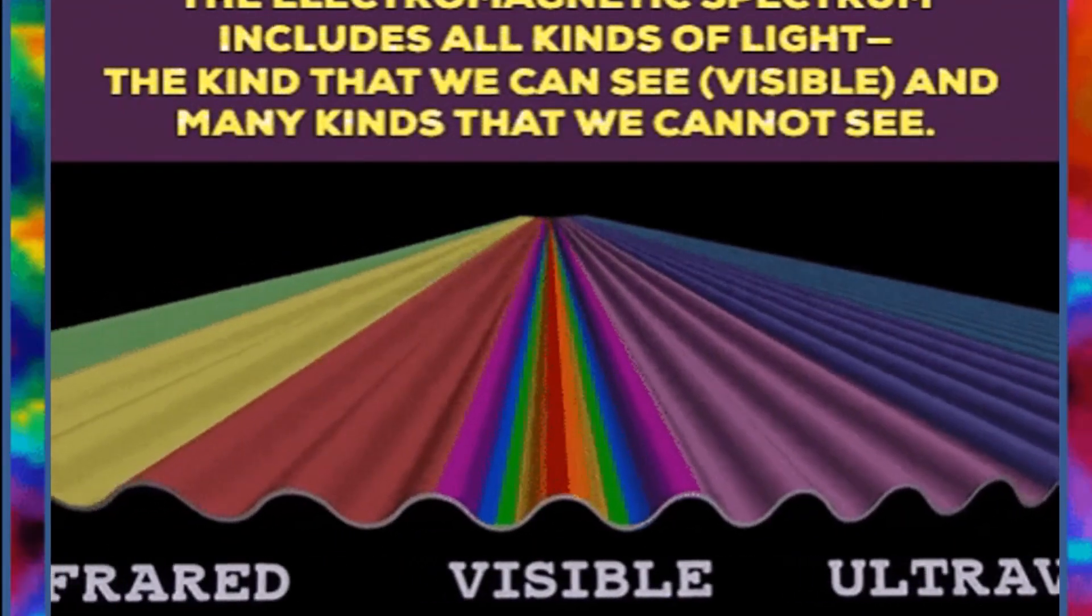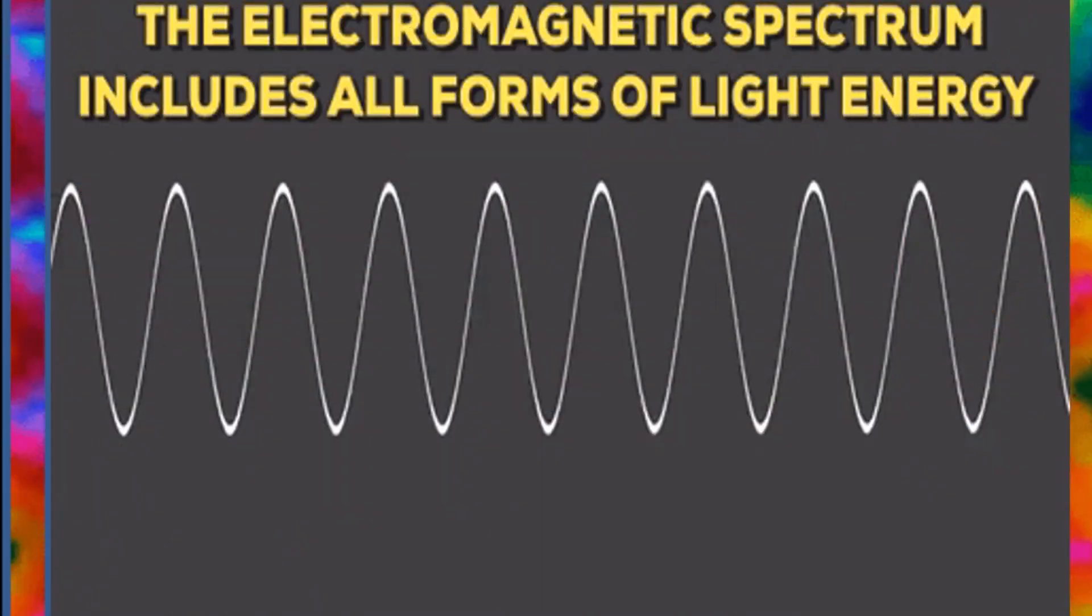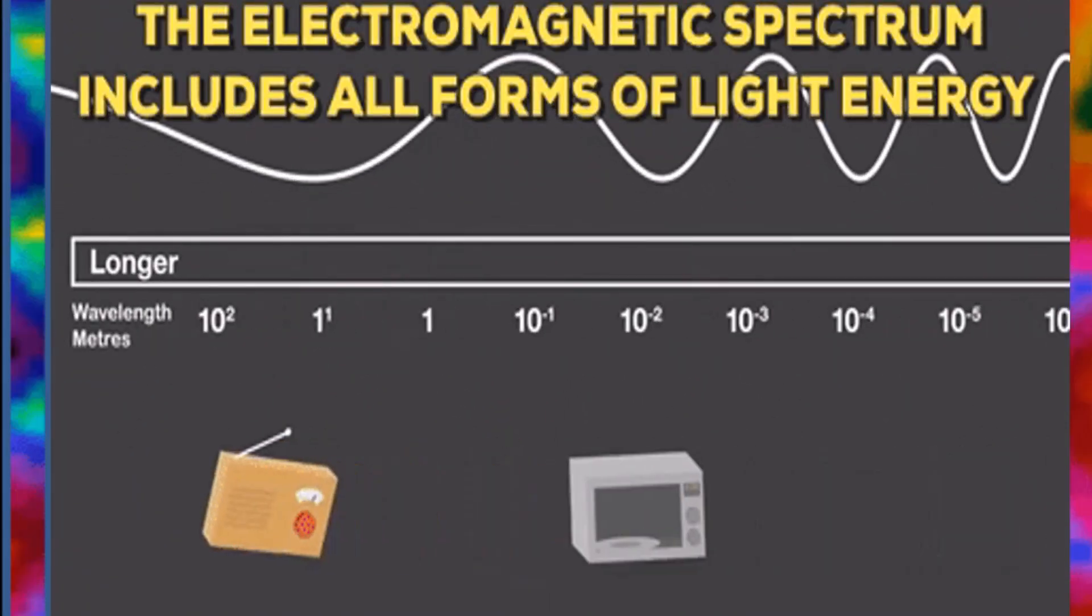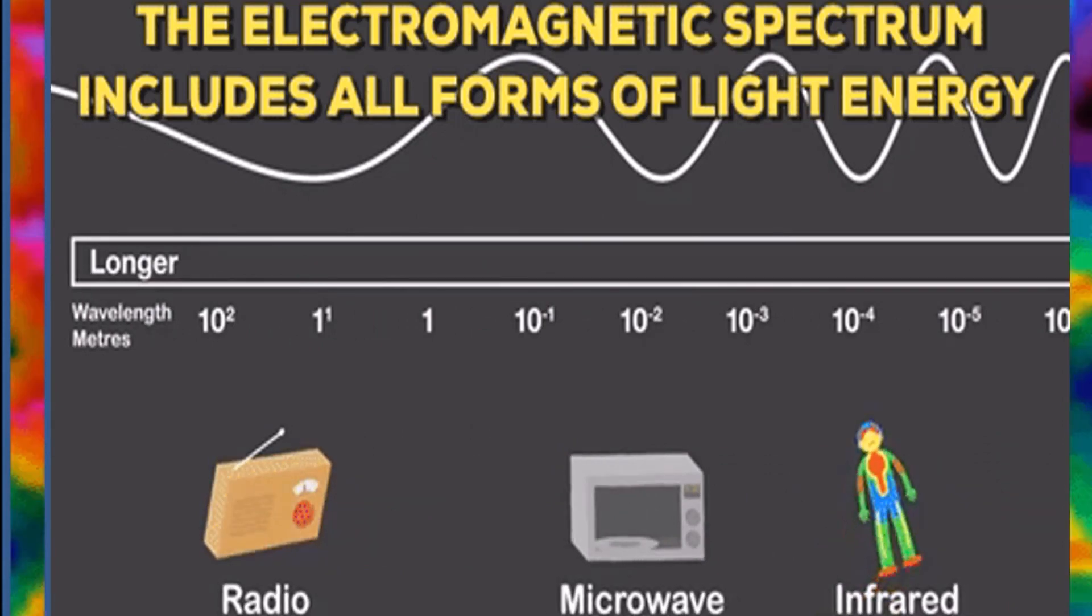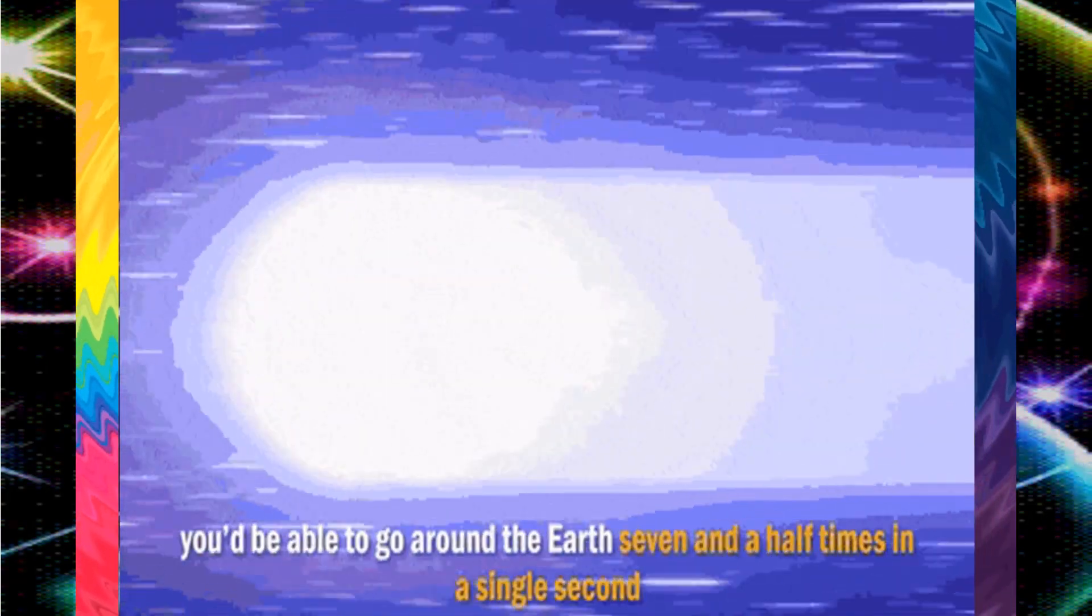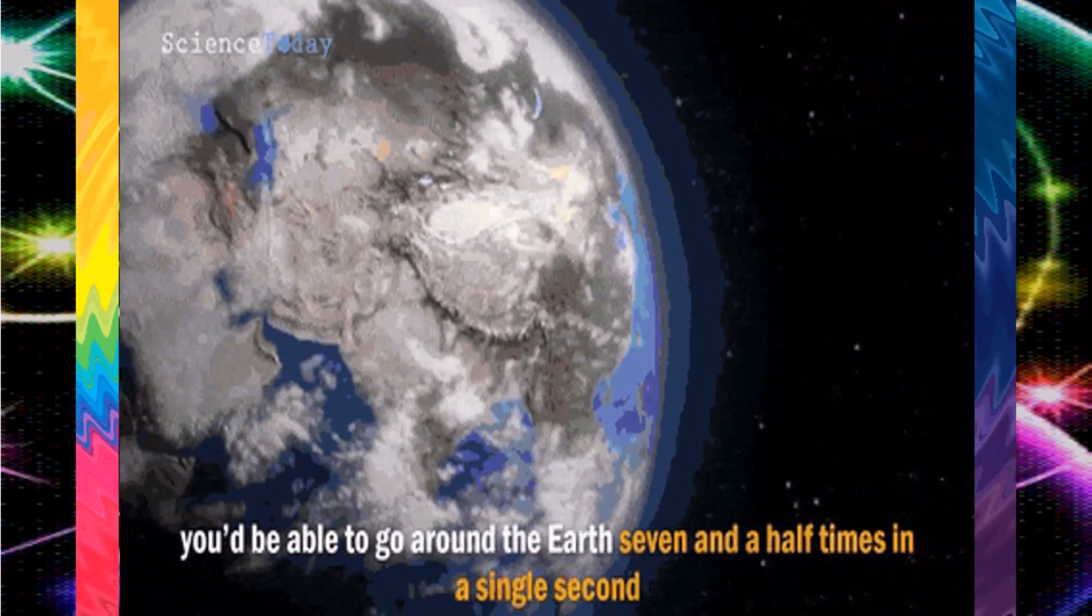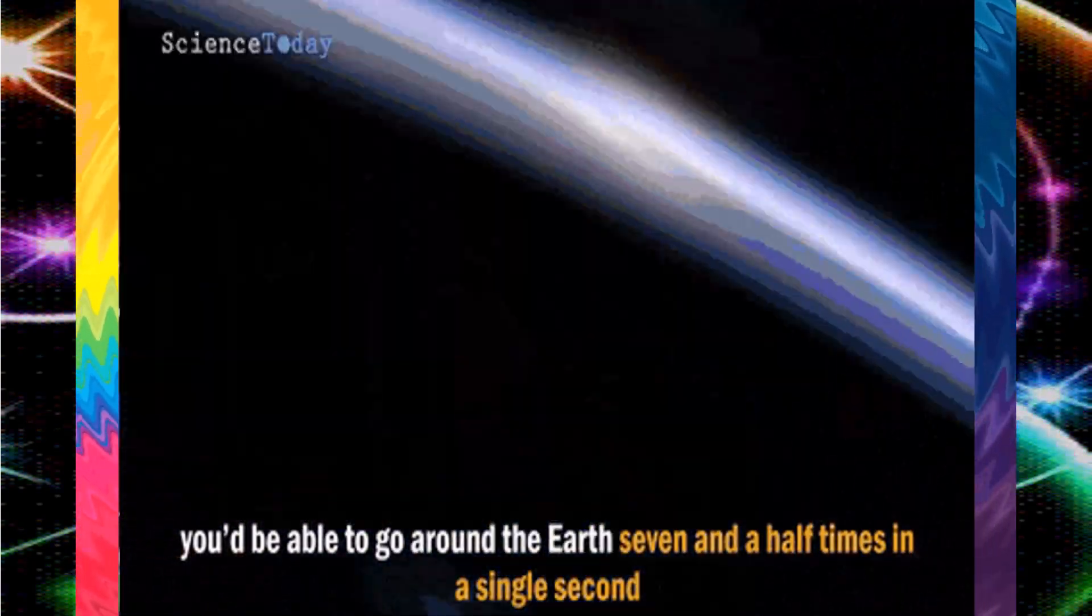When you think of light, you probably think of what your eyes can see. But the light to which our eyes are sensitive is just the beginning. It is a sliver of the total amount of light that surrounds us.